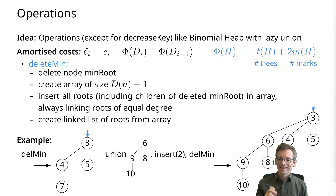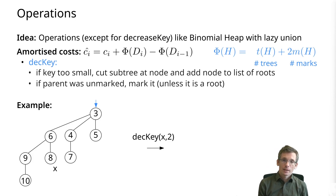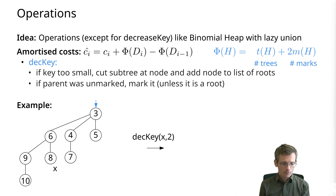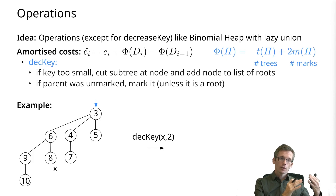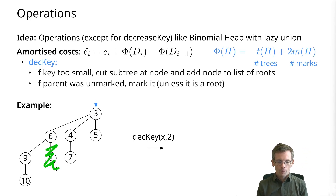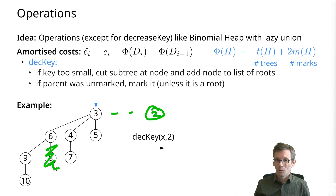Now we come to the decrease-key operation. We want to do it as lazily as possible. In this example, we want to decrease the key of node x — currently a key of 8, decreasing it to 2. In a binomial heap we would have bubbled this up, but that costs log n. So instead, if we decrease the key and this violates the heap property, we simply cut it out. The node with the new key becomes a separate node — this is the simplest possible way of solving our decrease-key problem.